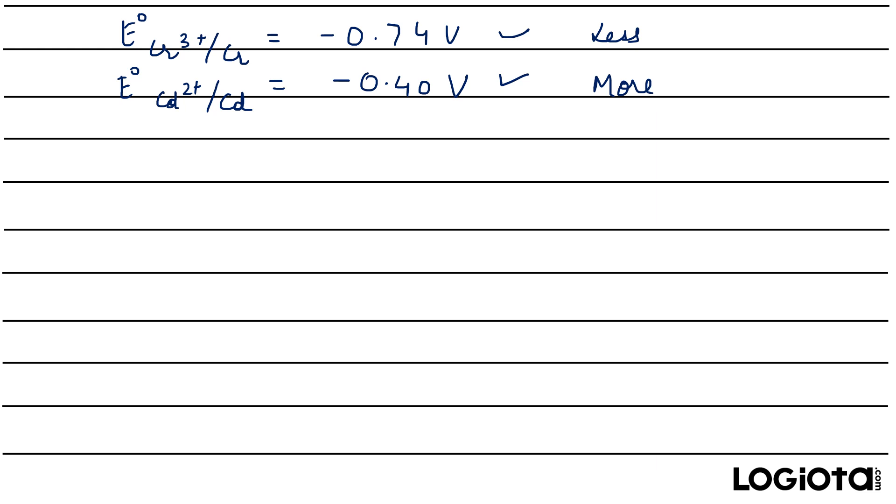Now you need to understand that if the reduction potential is more then it means that it can be easily reduced. As the reduction potential is more it means it can be easily reduced. Now if it can be easily reduced then it means that it is a cathode because on cathode the reduction occurs.